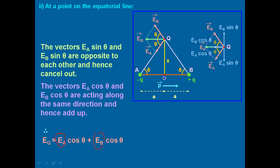The values of Ea and Eb are the same: q / (4πε₀(x² + a²)). So we can write Eq = 2q / (4πε₀(x² + a²)) · cosθ. To find cosθ, consider the right triangle BOQ. Here, cosθ = adjacent side / hypotenuse = a / √(x² + a²). Substituting this value of cosθ, we get Eq = (2/4πε₀) · q / (x² + a²) · a / (x² + a²)^(1/2).